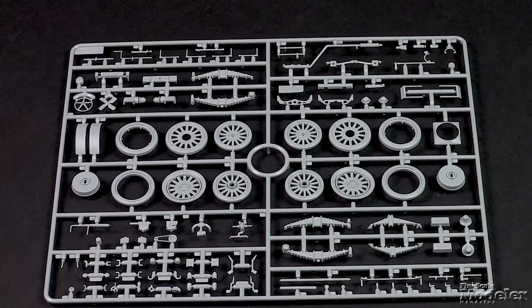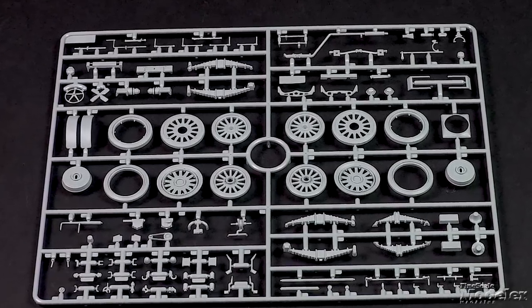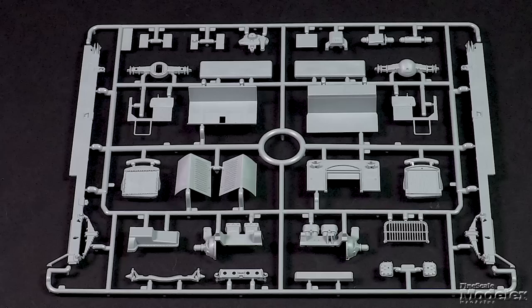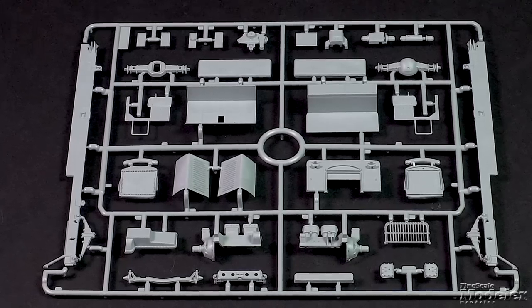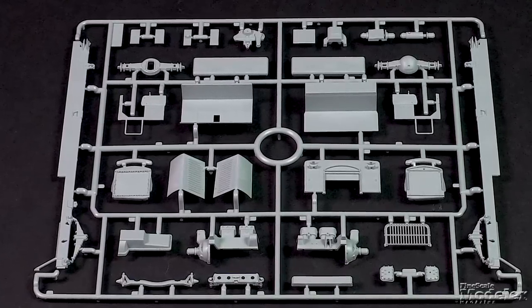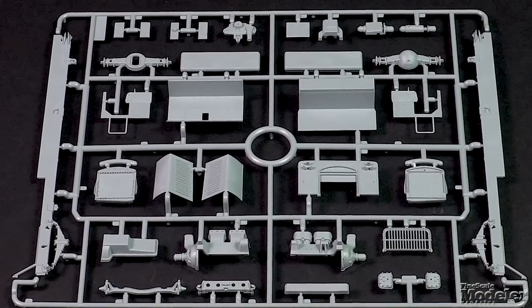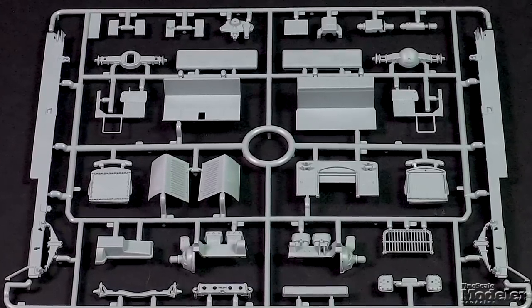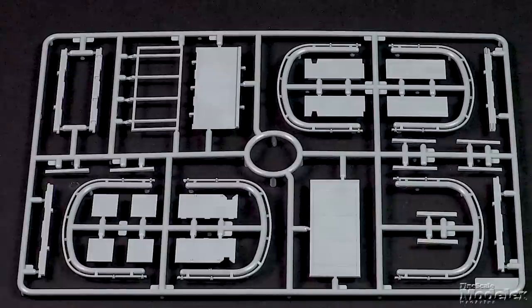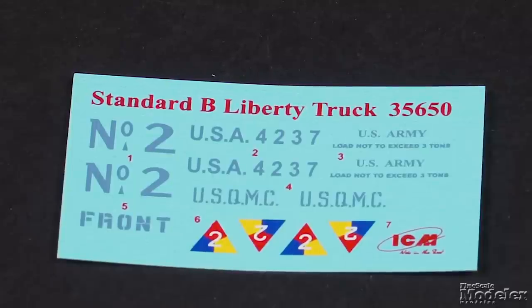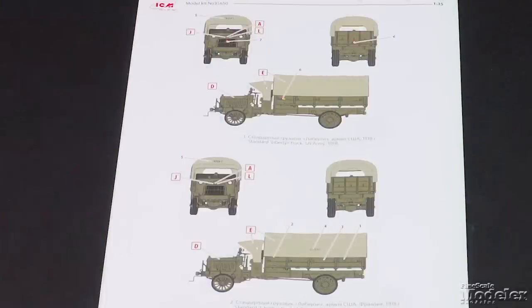One of two trucks included here, the standard B Liberty has heavy leaf springs and multi-part wheels with separate plastic tires. The big four-cylinder engine sits under a multi-part hood in front of the open cab. The long frame supports the three-ton truck with front and rear axles. The fineness of the plastic moldings is excellent. The bed has a floor and sides with an optional canvas roof or exposed bows running over the top. A small decal sheet provides markings for two U.S. Army trucks.